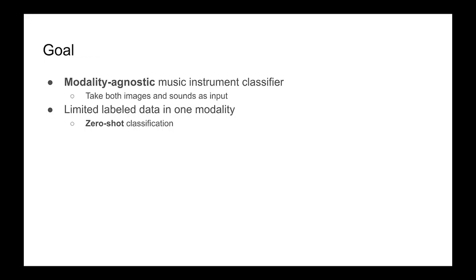The goal of this work is to first explore ways to design modality-agnostic music instrument classifiers which can take both images and audio as input and be able to make predictions with only one classifier. We also experiment one application idea of this modality-agnostic classifier in a scenario where we have more labeled data in one modality but limited labeled data from the other.